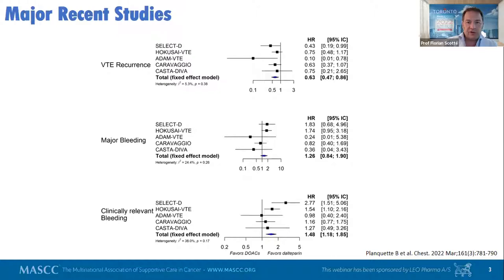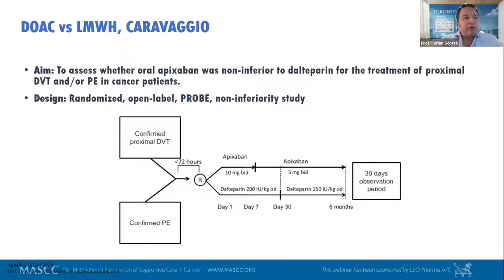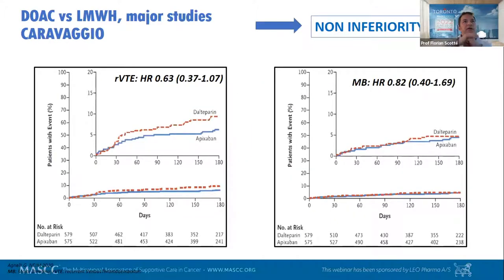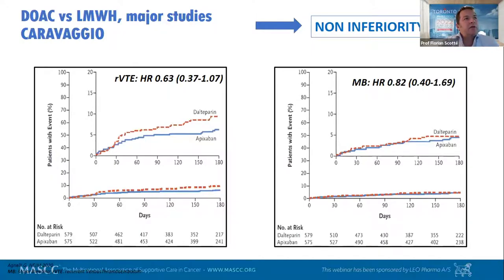Moving to the CARAVAGGIO study, published by Agnelli in the New England Journal of Medicine in 2020 — a large non-inferiority study comparing Apixaban to Dalteparin. Non-inferiority was reached: Dalteparin was equal to Apixaban in treating patients with pulmonary embolism and proximal thrombosis. There was no difference in VTE recurrence and no difference in major bleeding.